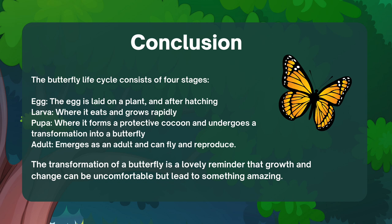In conclusion, the butterfly life cycle consists of four stages: egg, larva, pupa, and adult. The transformation of a butterfly is a beautiful reminder that growth and change can be uncomfortable but lead to something amazing. Embrace the process of transformation, just like the butterfly does.